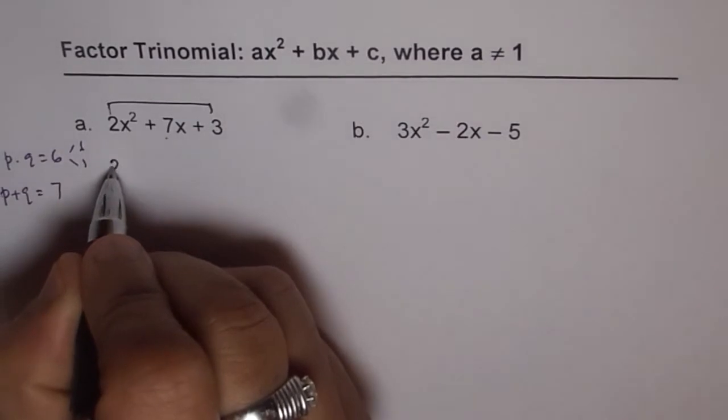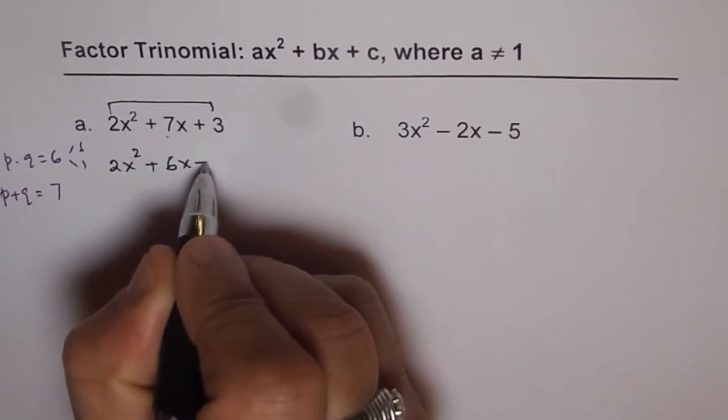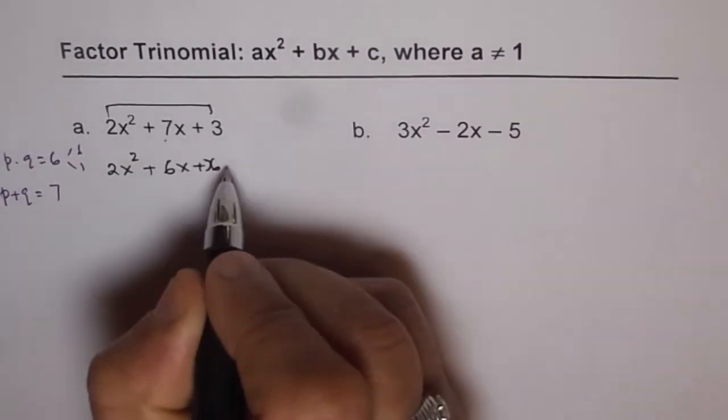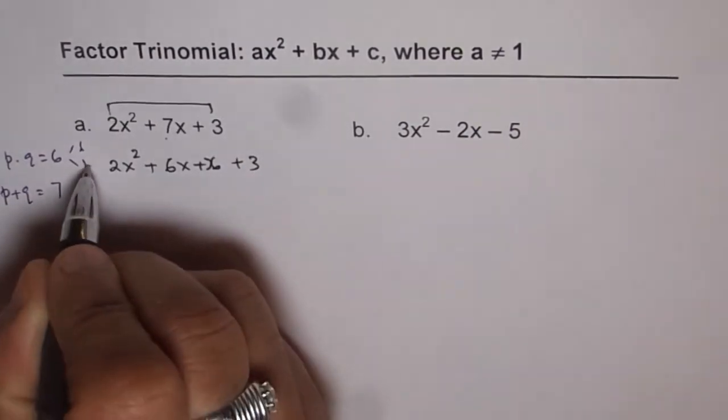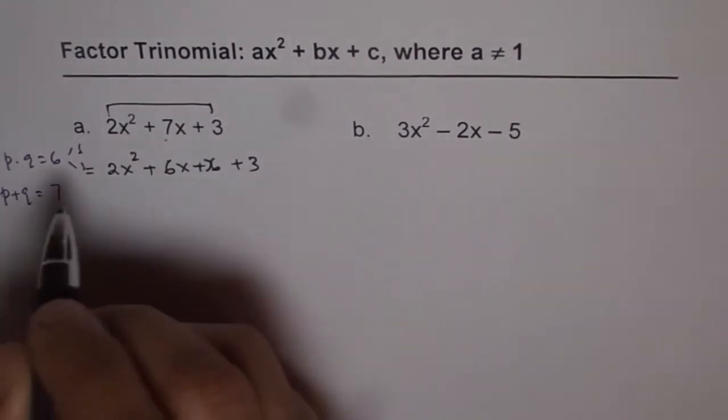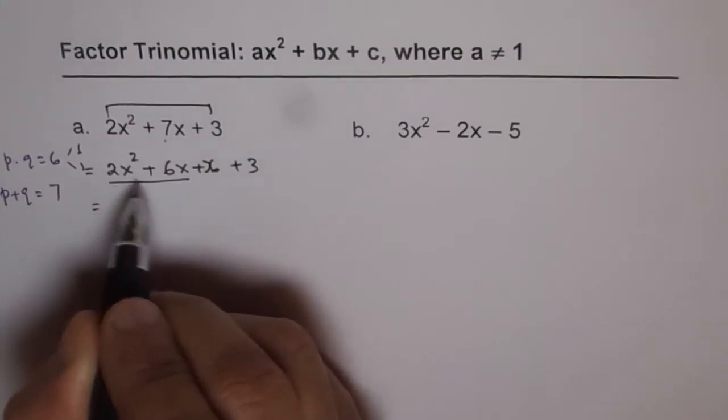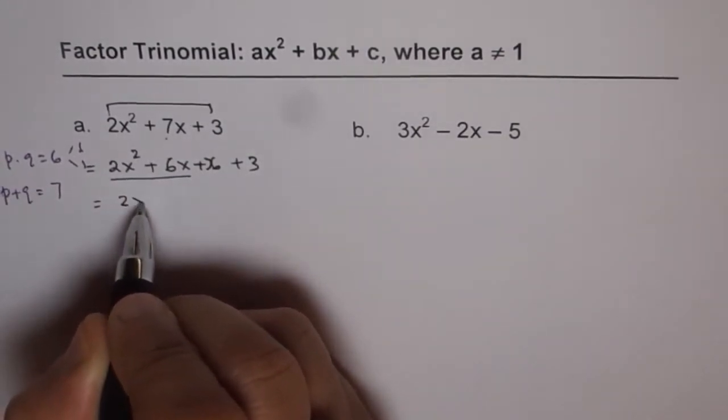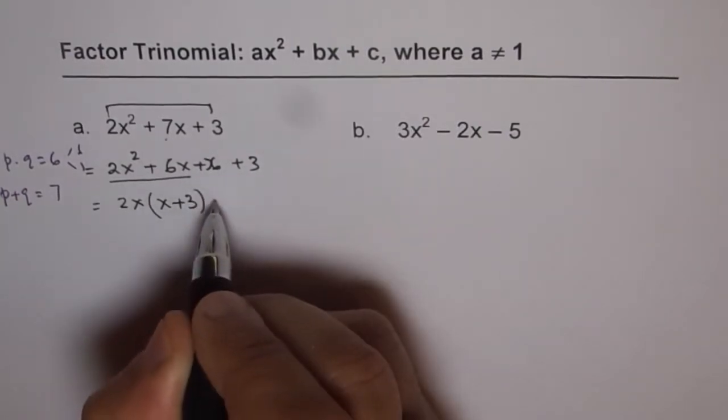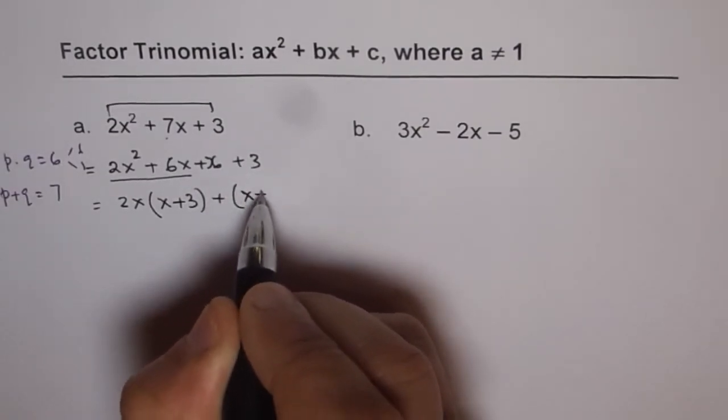You write the first term as it is, that is 2x², and then 7x as a combination of 6x + x. So that 6x + x gives you 7x plus 3. So this is equivalent expression to 2x² + 7x + 3. Now, you can factor common factors between 2x² and 6x. So we have 2x as a common factor here. You get x + 3 and there is no common factor. So we just assume 1 and write it in brackets, x + 3.